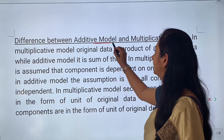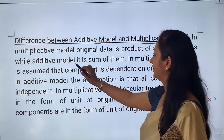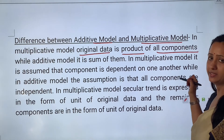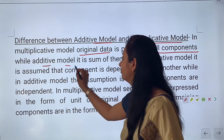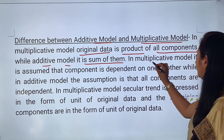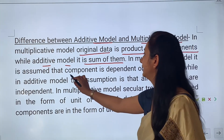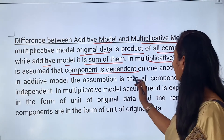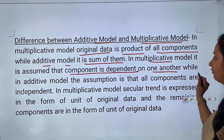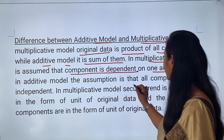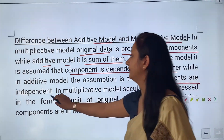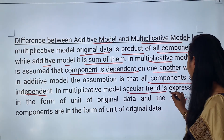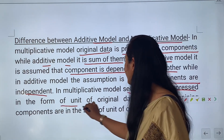The difference between the additive model and the multiplicative model: in the multiplicative model, original data is the product of all the components — multiplication of all. While in the additive model, it is the sum of them. In the multiplicative model, it is assumed that components are dependent on one another, while in the additive model, the assumption is that all components are independent. In the multiplicative model, secular trend is expressed in the form of units of the original data.